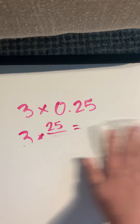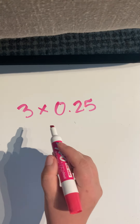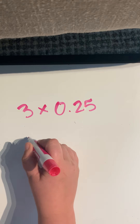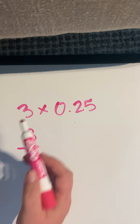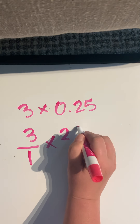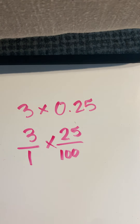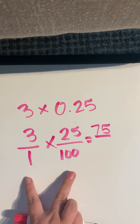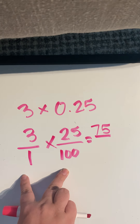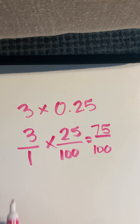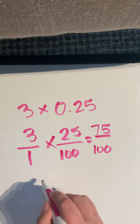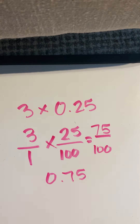Let me show you one more way to look at this same multiplication problem. I could write three over one — because under whole numbers we can have a one there — times 25 over 100 for my 25 hundredths. I already know that 25 times 3 is 75. When finding a product, I multiply straight across on the bottom, so 1 times 100 is 100. I end up with 75 hundredths, and in decimal form that's 0.75.